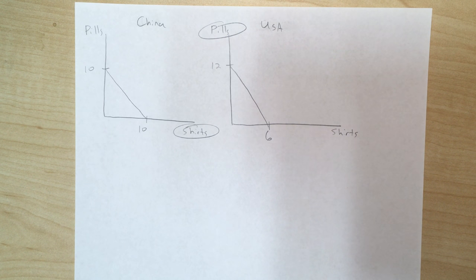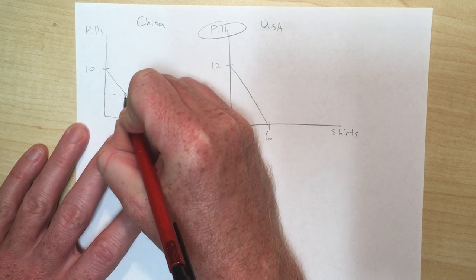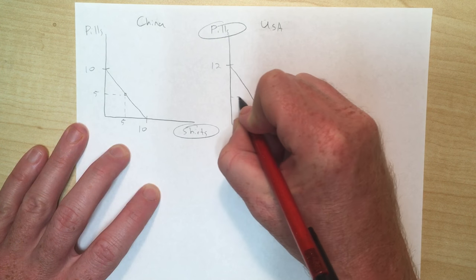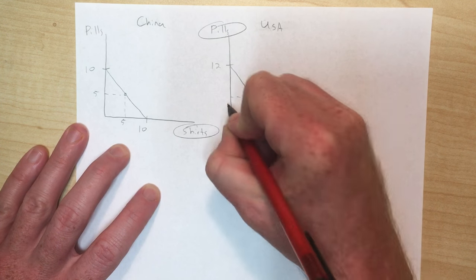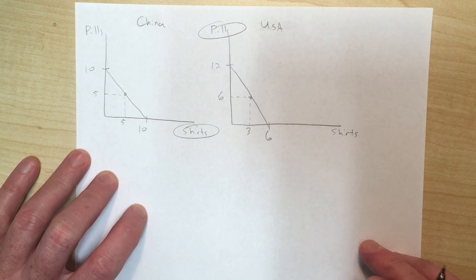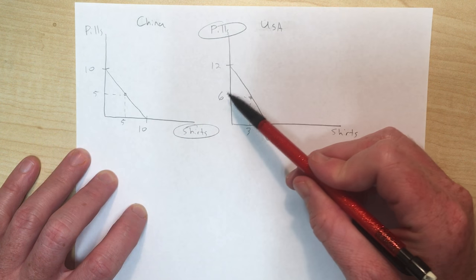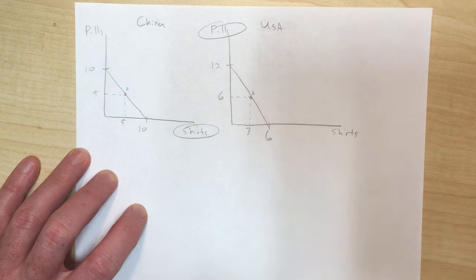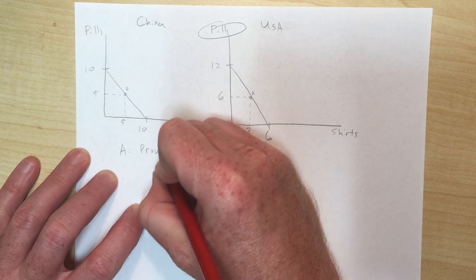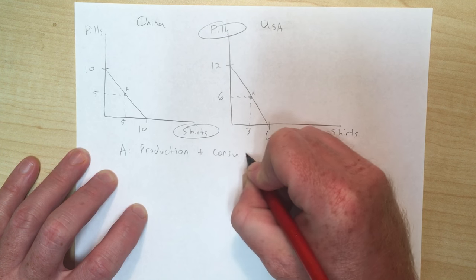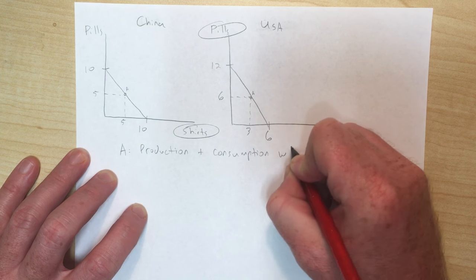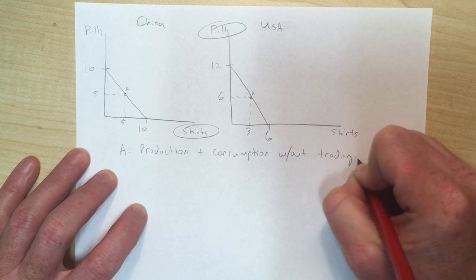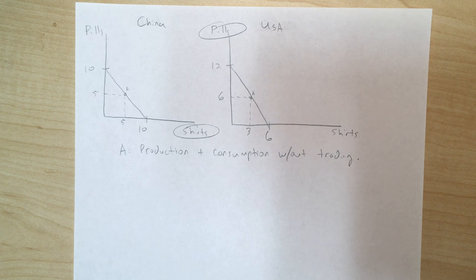Next I want to show that these countries could be better off if they traded. Let's imagine that if they don't trade, they produce right in the middle of their production possibilities frontiers — China produces 5 pills and 5 shirts, the US produces 6 pills and 3 shirts. I'll label this point A, which represents production and consumption if they don't trade.